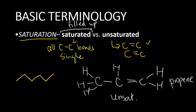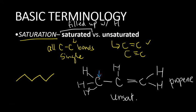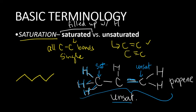Saturated means filled up with hydrogens. What does that mean? For example, this carbon — does this carbon have a double bond or a triple bond? No. So we can say that this carbon is saturated, meaning it has the most number of hydrogens. Indeed, how many hydrogens does it have? One, two, three. How about this carbon? This is a double bond, and therefore we describe this carbon as unsaturated. Since we have both saturated and unsaturated carbons, the entire compound is unsaturated — the unsaturation supersedes the saturation.